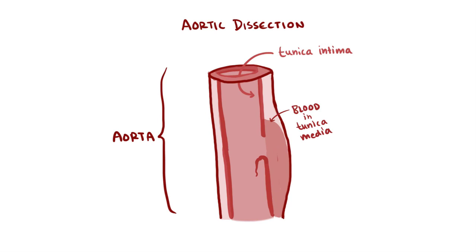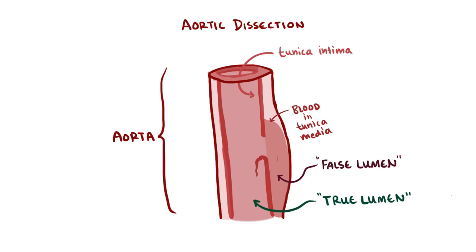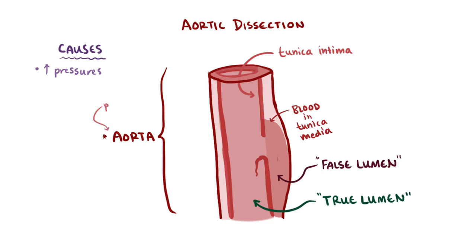The area where blood collects between the tunica intima and the media is called a false lumen, and the true lumen is the regular lumen of the blood vessel. Since high pressure is a cause of aortic dissection, it's no surprise that the aorta is the prime target for this problem.